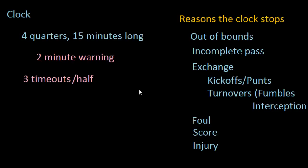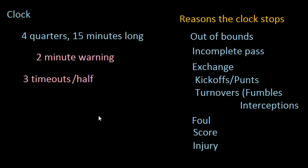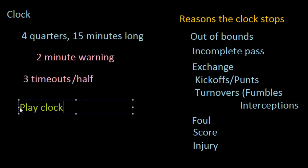Now that we understand the general ways that the clock works and how the timing of the game is run, let's take a look at another important aspect of timing the game, and this aspect is called the play clock. The play clock is much like a shot clock in basketball, which is to say it forces the team on offense to continue playing — or, put another way, it prevents the team on offense from getting a lead and simply standing there with the ball to run out the clock for the rest of the game. The play clock kind of forces both teams to continue to move forward and continue to play.